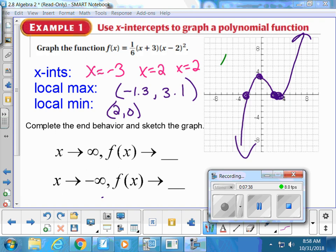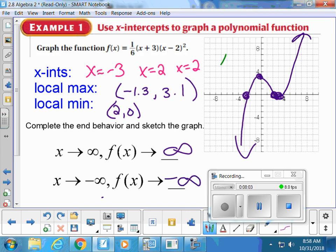Let's complete the end behavior for this graph. It's been a while since we've seen questions like this. As x approaches infinity, how do the y values behave? They go up. As x approaches negative infinity, or as we go to the left, what are the y values doing? Going down.